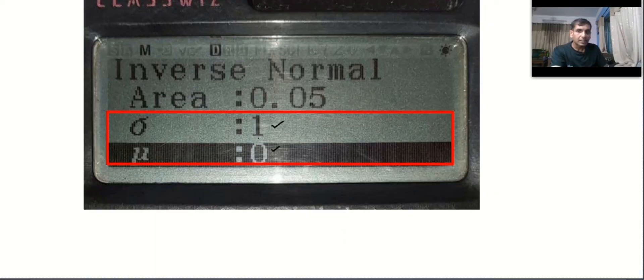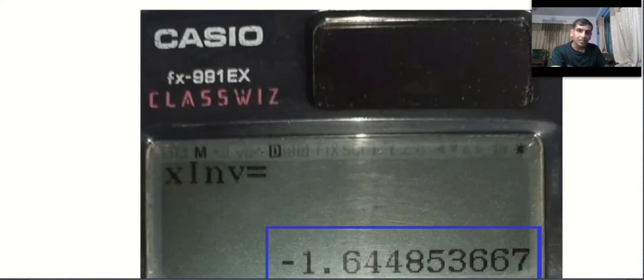Don't forget, it's n01, that's it. We got the inverse value. That means the value of a where probability Z less than a is equal to 0.05 is minus 1.645.